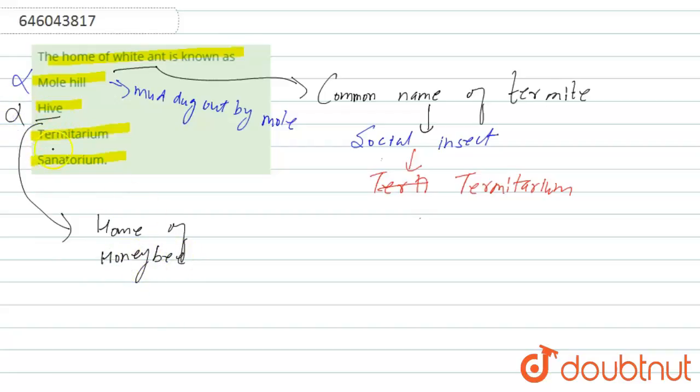Option 3 is termitorium, and termitorium is the home of termite, which means home of white ant. So this one is correct.